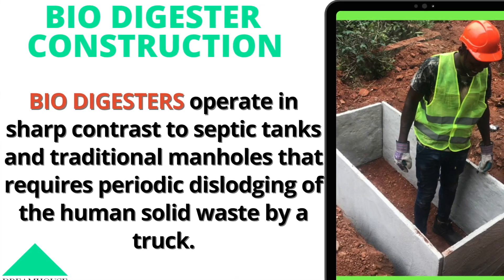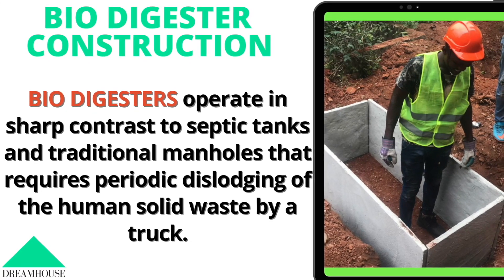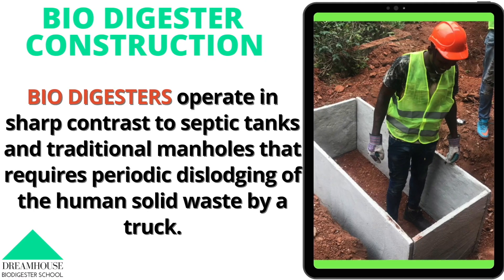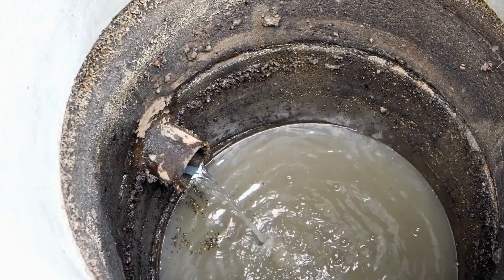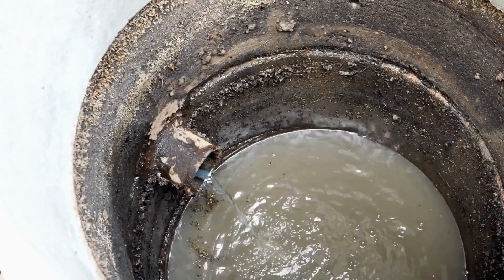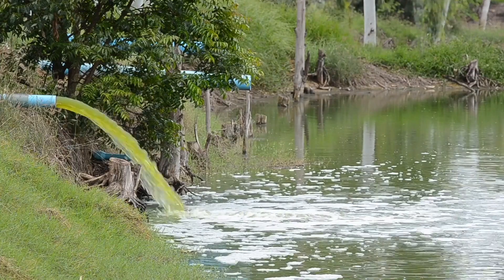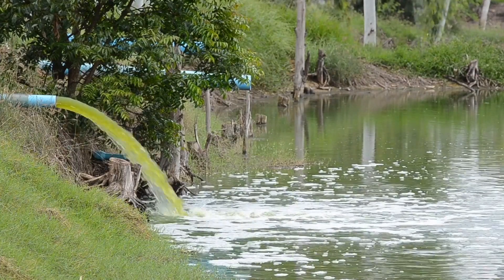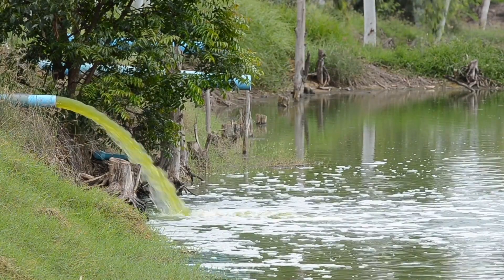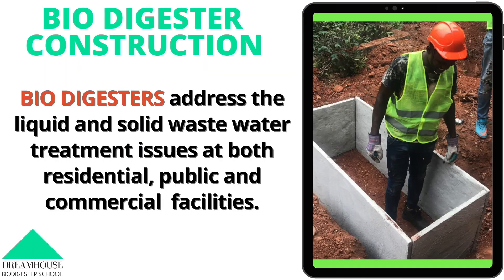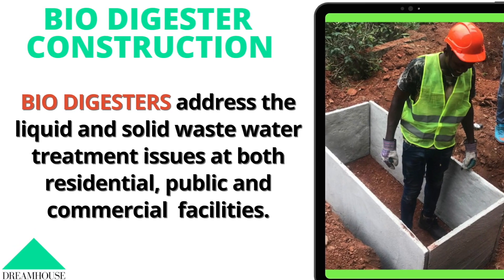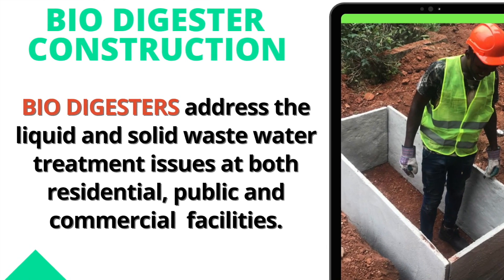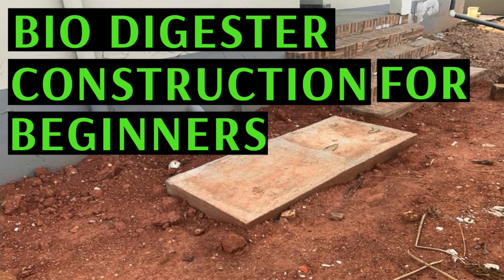These biodigesters are in sharp contrast to what we have grown used to in this part of the world — the septic system, the KVIP, ventilated pits, and manholes — whereby solid waste is stored in a tank for a number of months or years, and then a tanker has to come and dislodge it and dump it at a site. Sometimes it is dumped in the sea untreated, which affects aquatic life. The biodigester scheme was a game changer because the solid waste produced is easily disposed of with no remains that will affect the environment, making biodigesters an effective means of managing toilet wastewater.